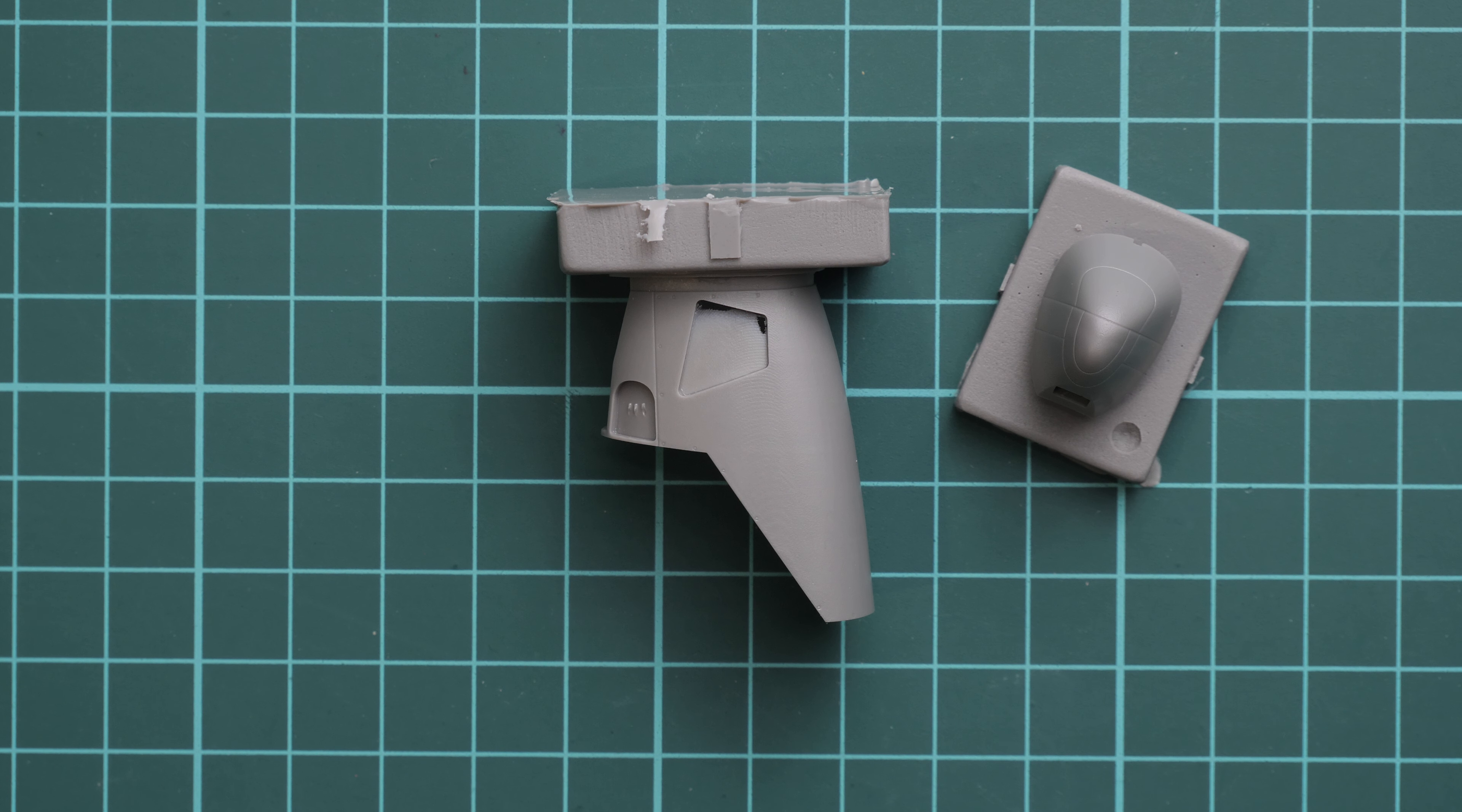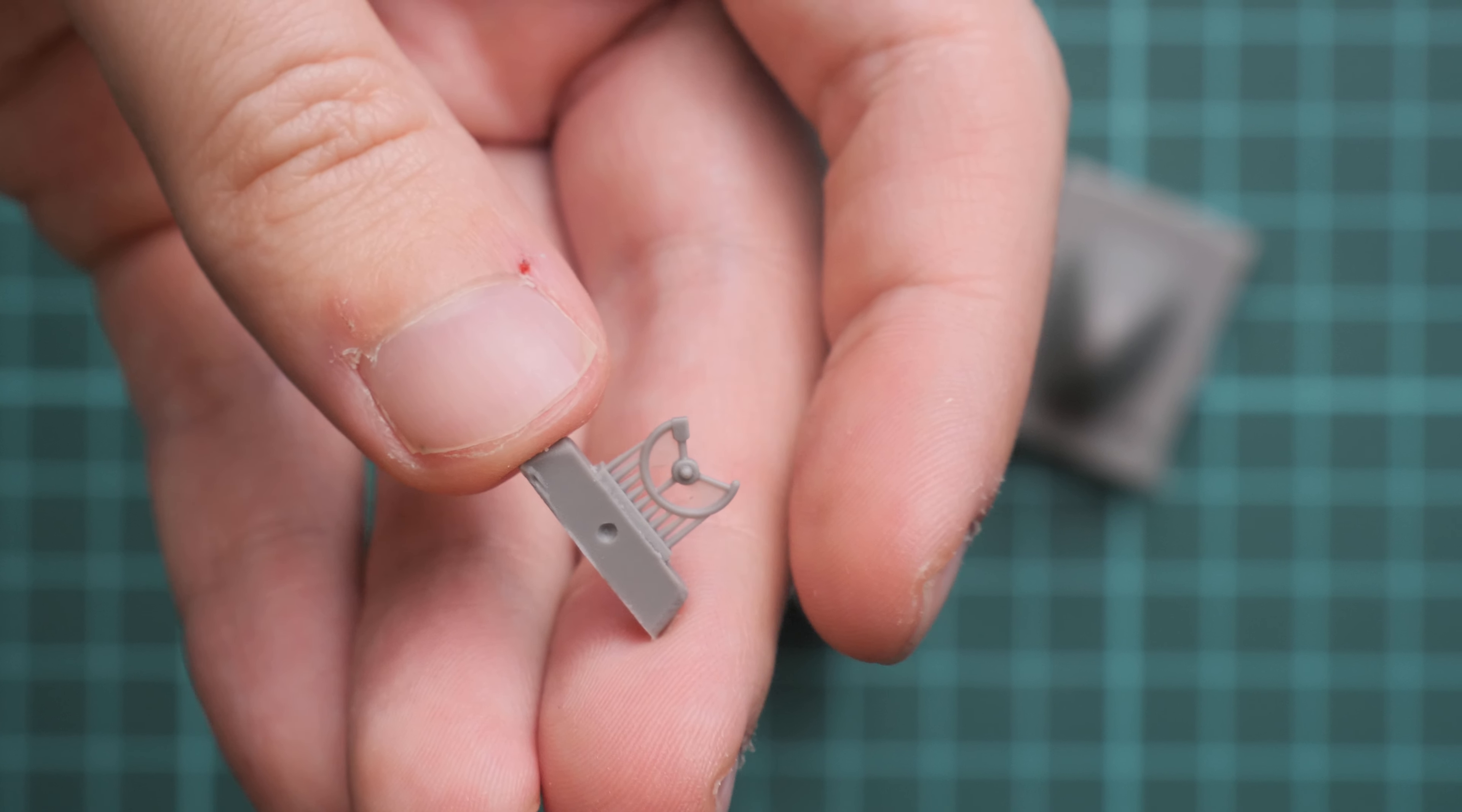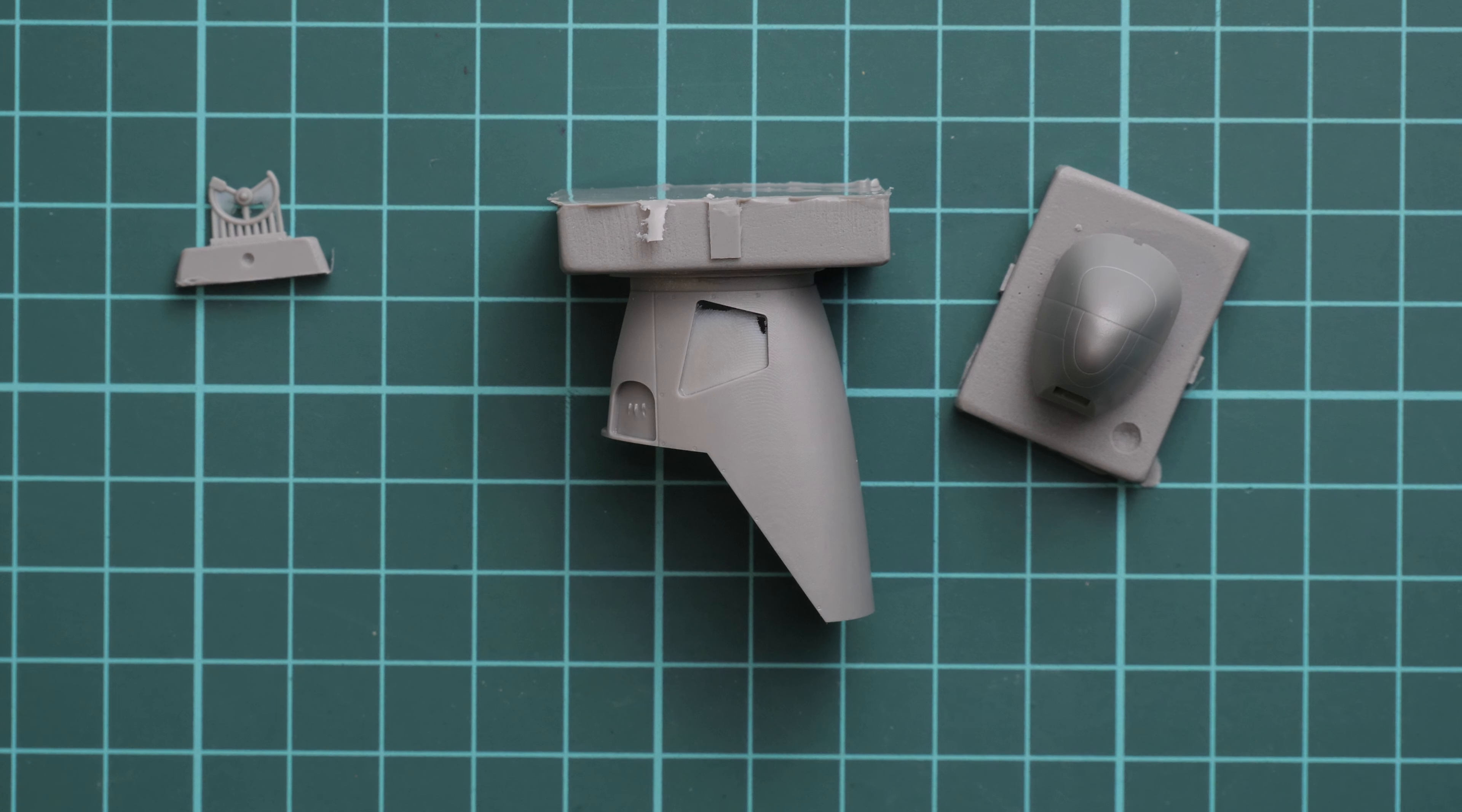Next we go on with special resin parts for the cockpit. Here we have this control yoke. It's a one-piece part, really tiny, even though this is 1/48 scale. It's quite small, so be careful while handling it because it's really small and thin, so it should be easy to break.